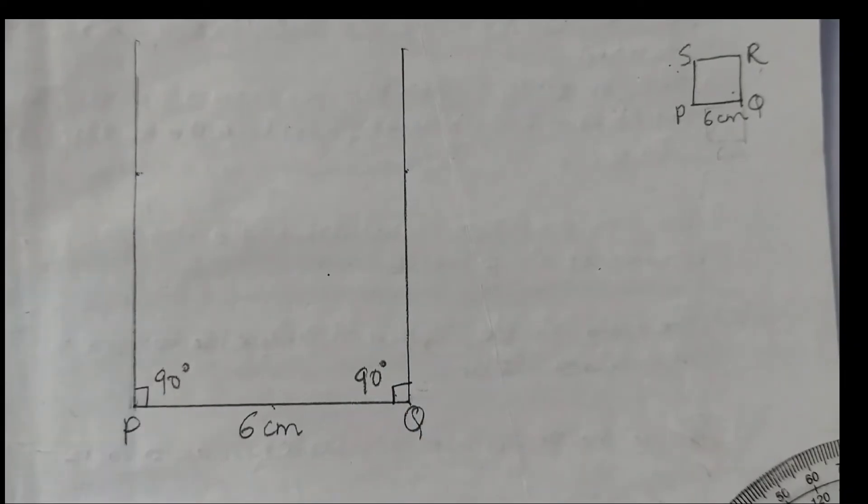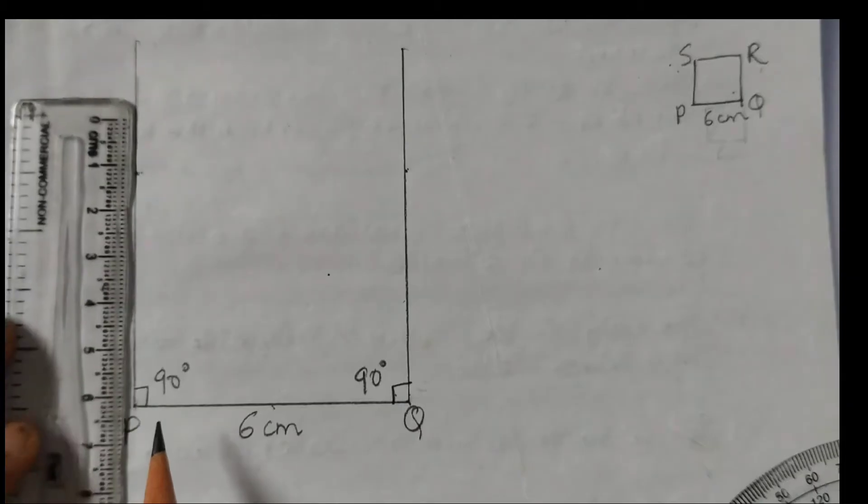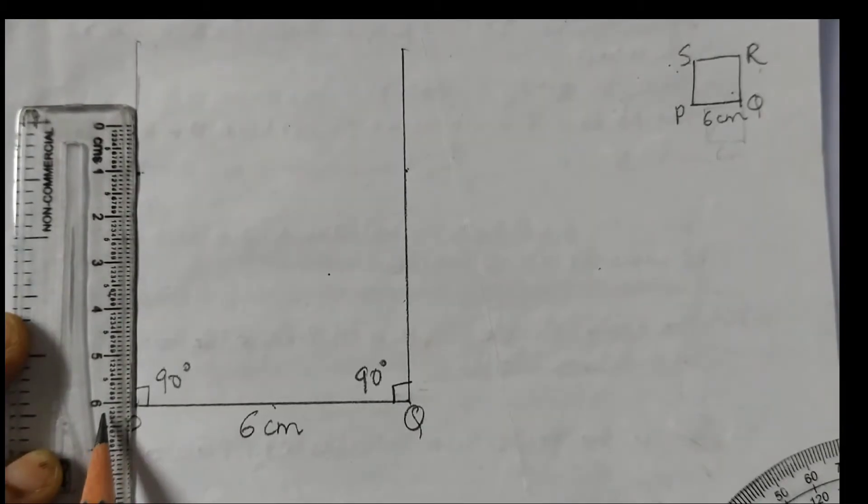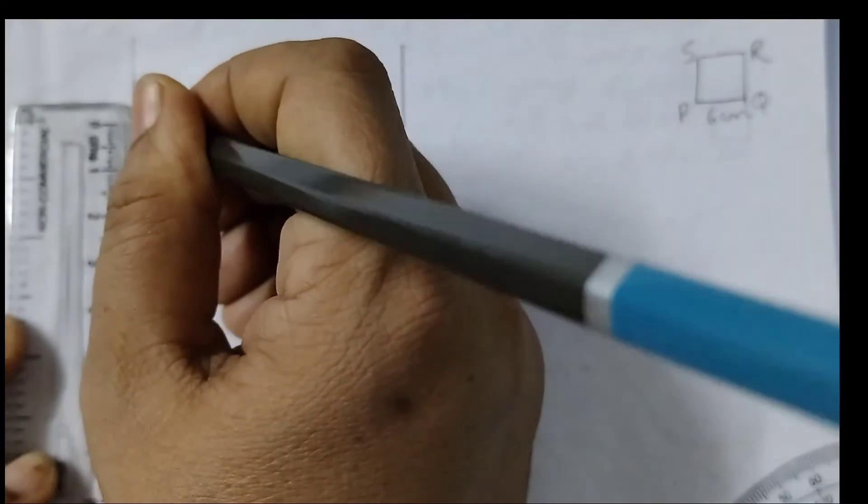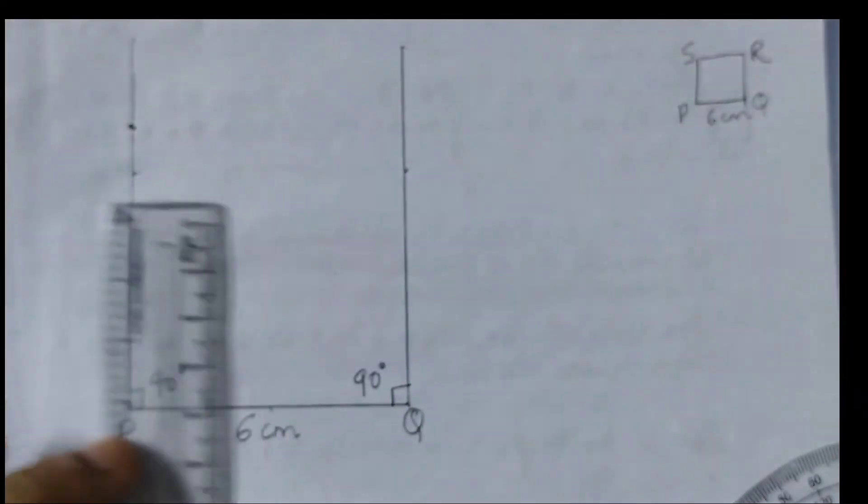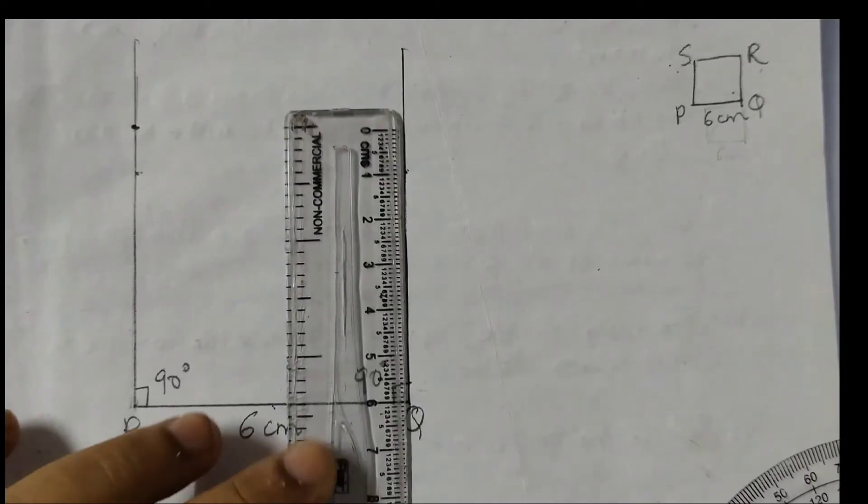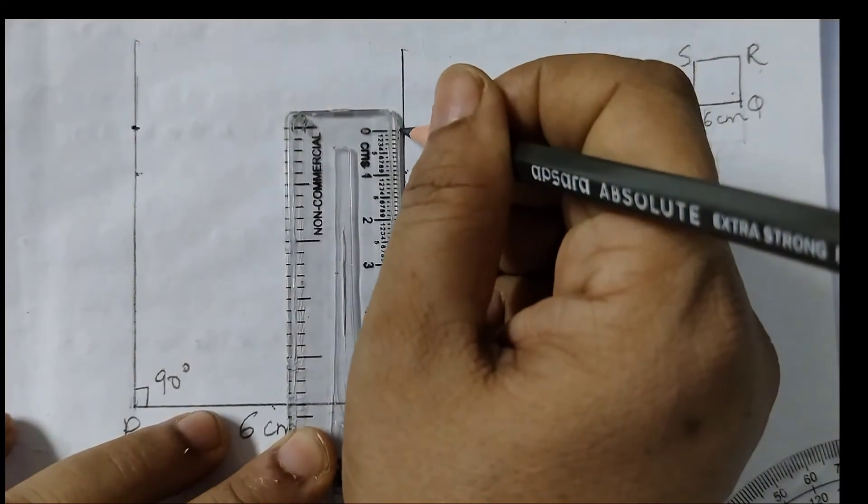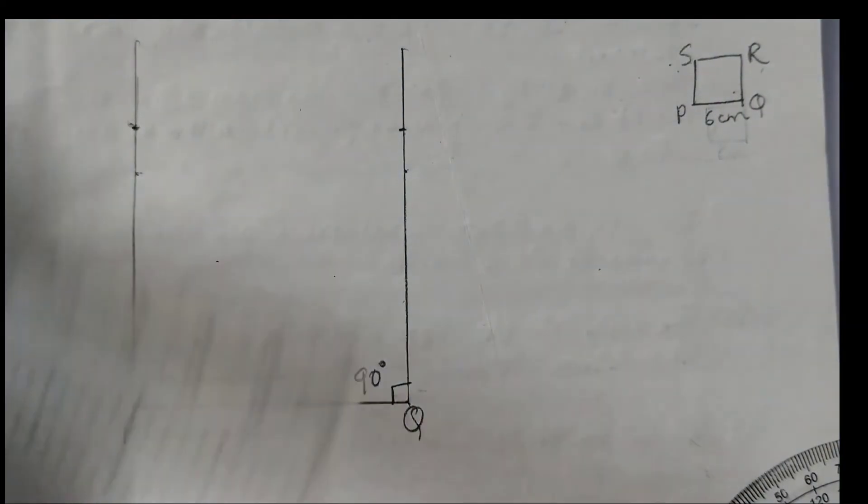Now we need 6 cm here and 6 cm here. There are two ways you can do it. Either you take the ruler and see 6 cm here. This is 6 here and this is 0. So I can just put a point here marking here. Similarly here also I will place it because I need 6 cm. So I will mark it like this. This is one way of doing it using the ruler.